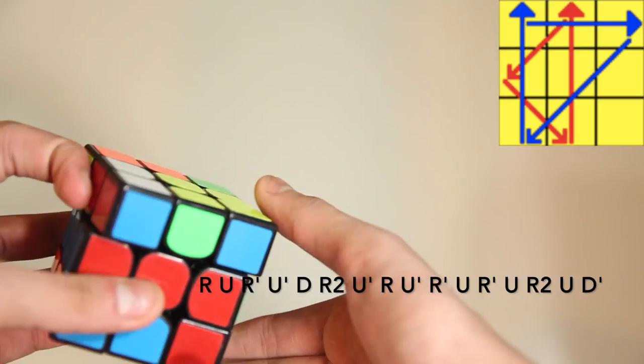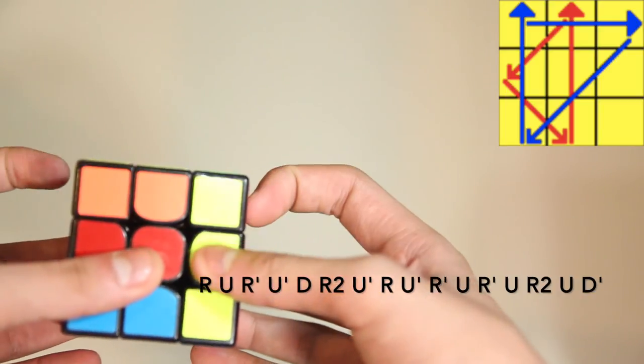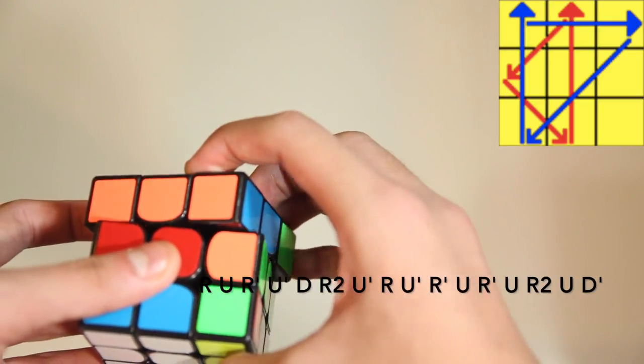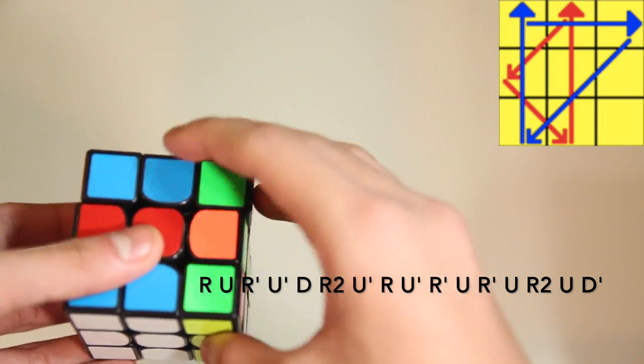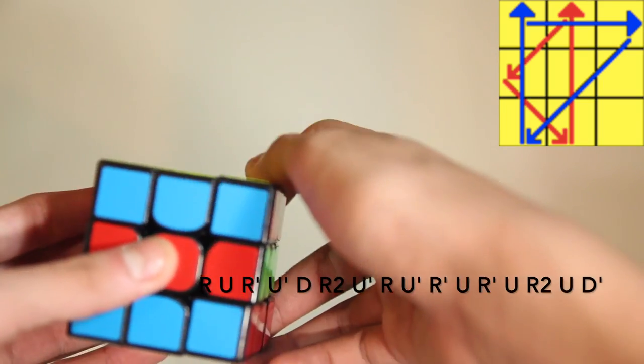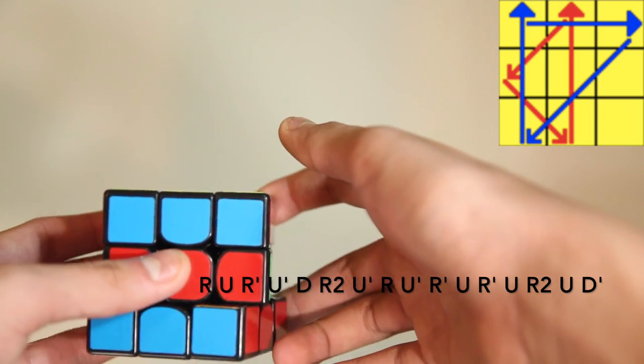U' R U' and then R' U R U using your pinky and your first finger. And then R2. And the AUF is like that.